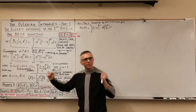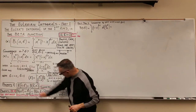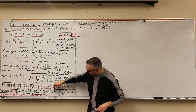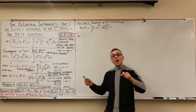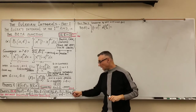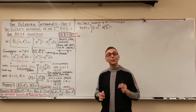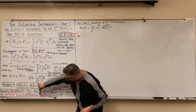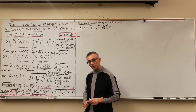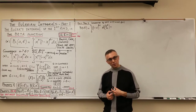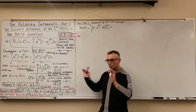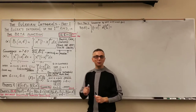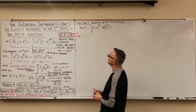The second very important property: beta of a, b equals a conversion factor times beta of a, b minus 1 — the second argument is reduced by 1. Similarly, beta of a, b equals a conversion factor times beta of a minus 1, b — the first argument is reduced by 1. These are called the argument reduction formulas. Since we require both arguments to be positive, when reducing b we need b minus 1 greater than 0, meaning b greater than 1.